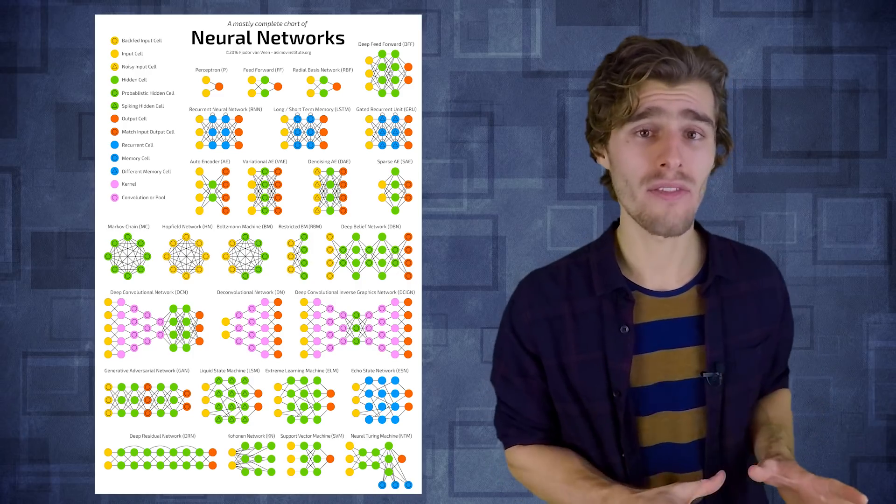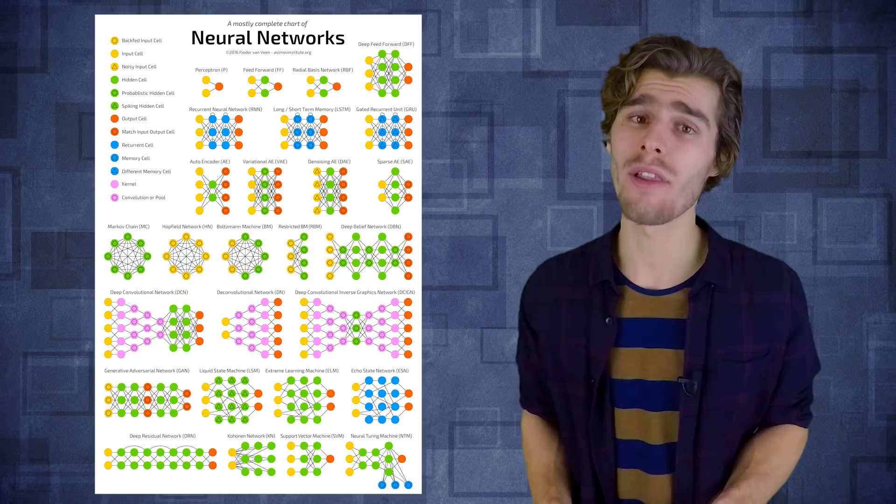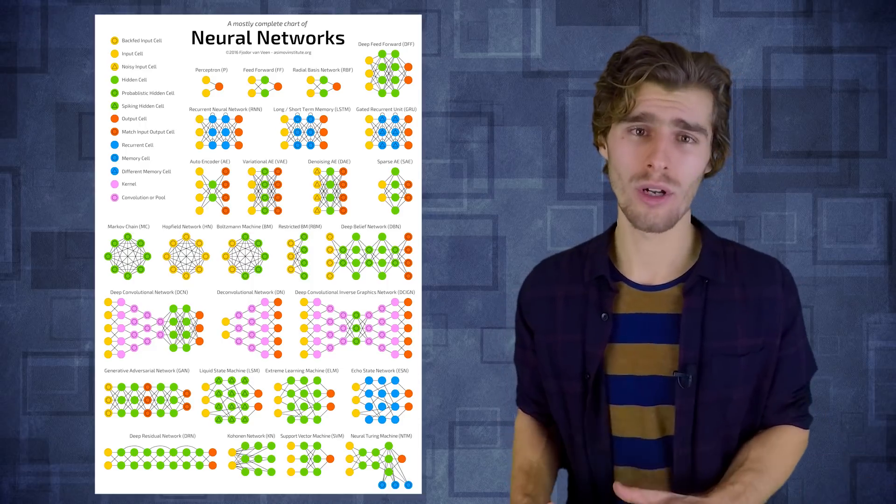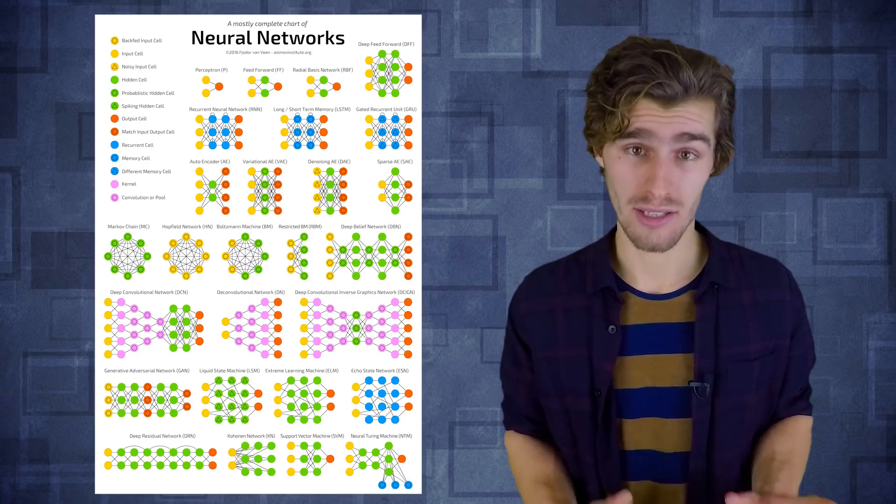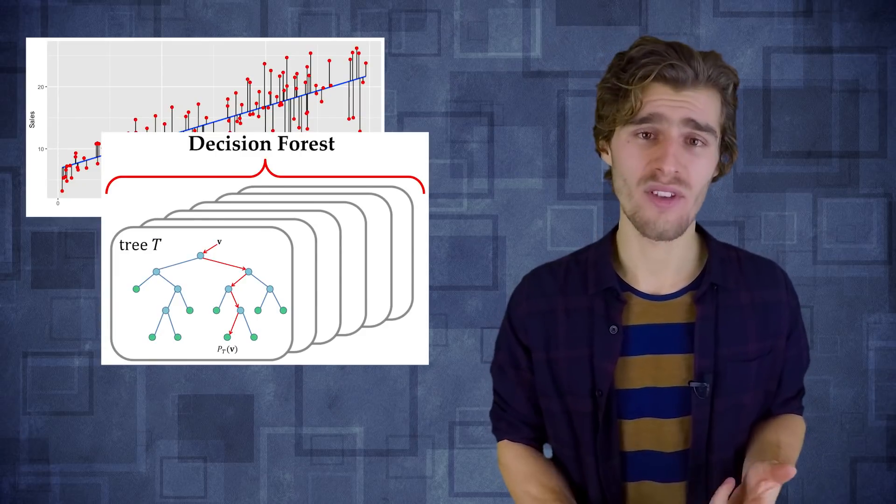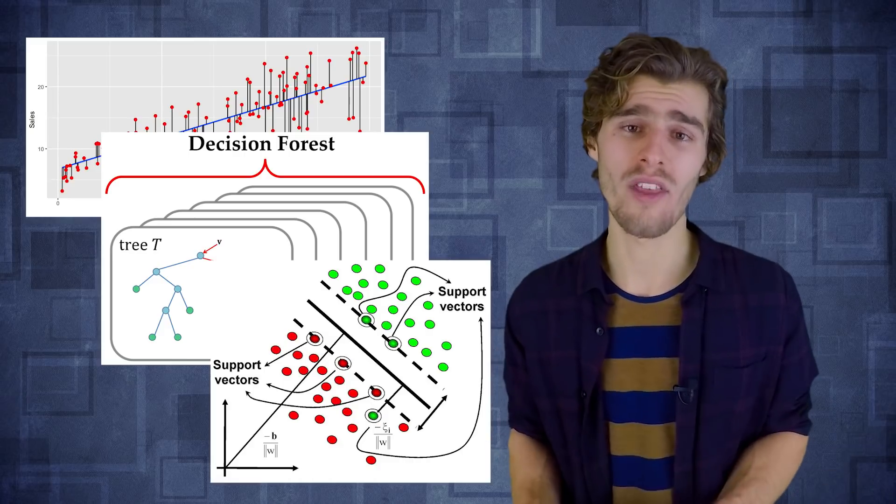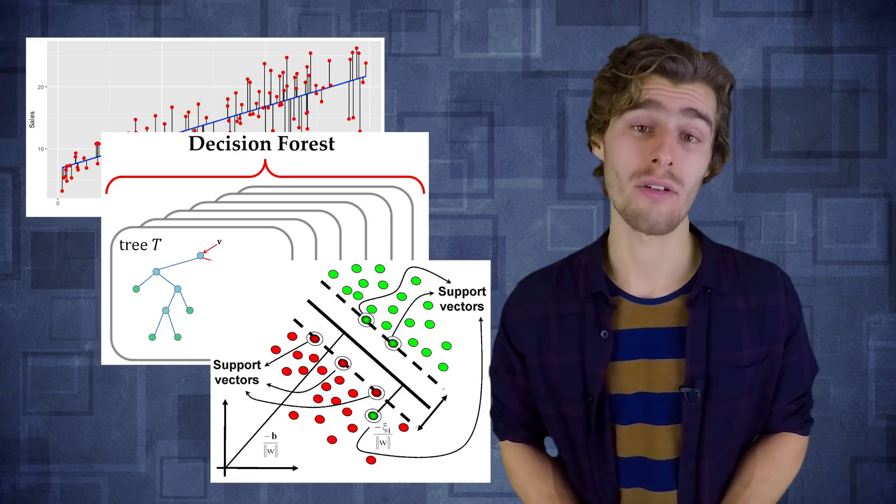So there are a few astonishing things about adversarial examples. The first is that we can generate adversarial examples for any known network architecture that we have today. So whether it's a vanilla network, a recurrent network, a convolutional network, it doesn't matter. For every single one of them we can generate adversarial examples. In fact, adversarial examples are so strong and so common that we can even generate them for more traditional machine learning models like linear regression, random forest, SVMs, you name it. Every single one of them can be attacked using an adversarial example.